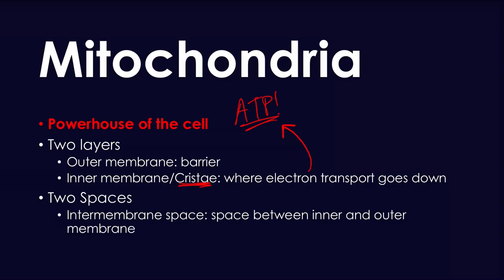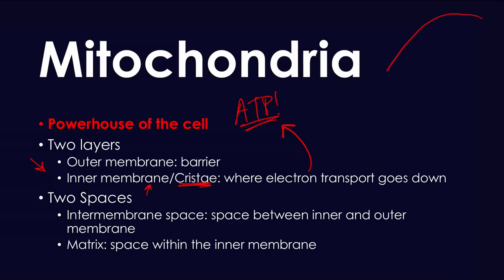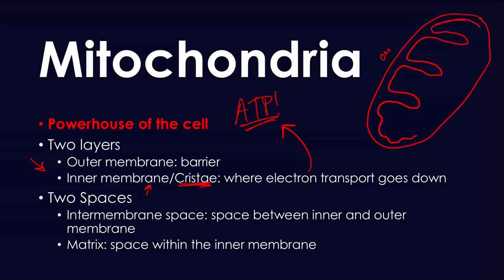Because the mitochondria has two layers, it has two spaces: the intermembrane space, which is the space between the two layers, and the matrix, which is the space within the inner membrane. The outer membrane is on the outside, the inner membrane is on the inside, and within the inner membrane you have these folds — the cristae — where the electron transport chain is happening. The area within the inner membrane is the matrix, and the space between the two membranes is the intermembranous space.